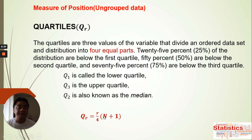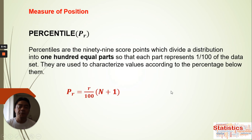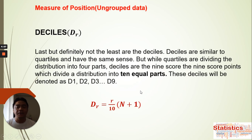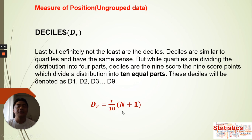For percentile: percentiles are the 99 score points which divide the distribution into 100 parts, from P1 to P99. The formula is: Pr = (r/100) × (n + 1). For decile, we divide into 10 equal parts with D1 through D9, using the formula: Dr = (r/10) × (n + 1), where r ranges from 1 to 9 and n is the number of data values.